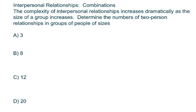Hi everyone! This is another combination problem. The complexity of interpersonal relationships increases dramatically as the size of a group increases. Determine the numbers of two-person relationships in groups of people of sizes three.